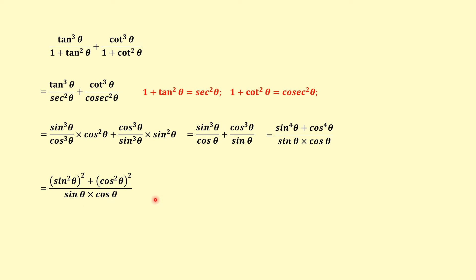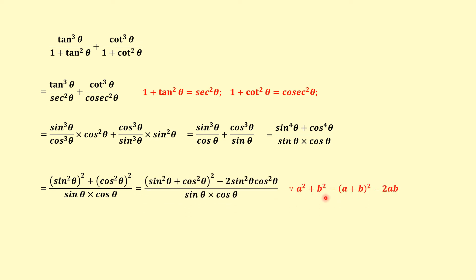Here we have an advantage. We use the identity: a² + b² = (a + b)² − 2ab, where a = sin²θ and b = cos²θ. The denominator is sinθ · cosθ. Since sin²θ + cos²θ = 1, this simplifies to: (1 − 2sin²θ · cos²θ) / (sinθ · cosθ).